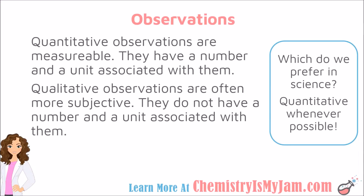There are two major types of scientific observation that you can make. The first one is a quantitative observation. Quantitative observations are measurable — they have a number and a unit associated with them. For example, you might say: I used 32 milliliters of fluid, or the room is 24 degrees Celsius, or there are 10 cars in the parking lot. Each one of these observations has both a number and a unit associated with it.